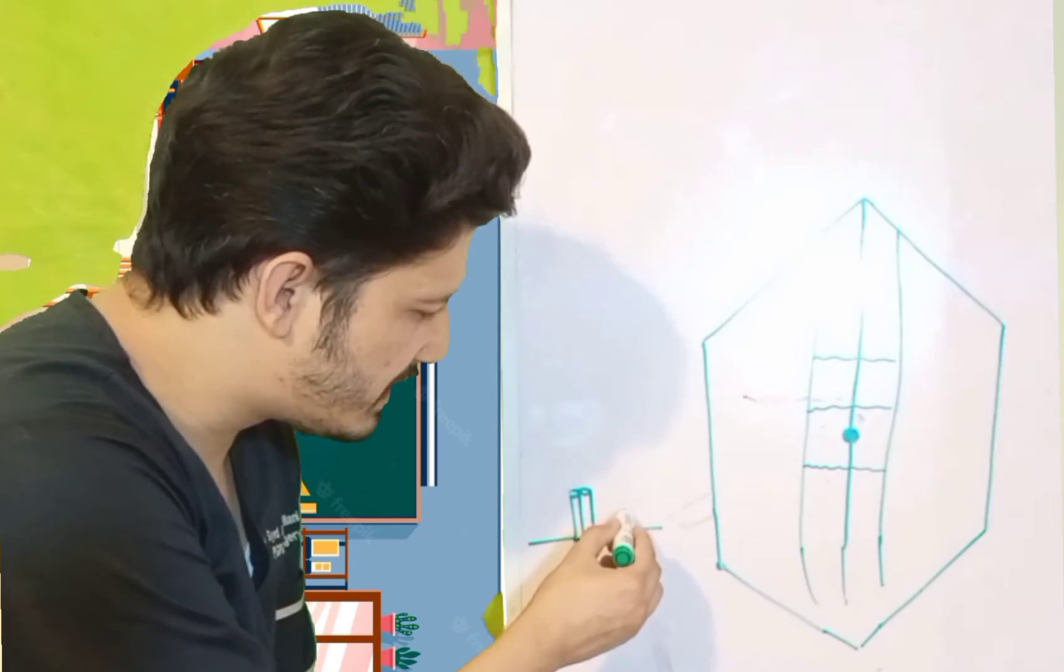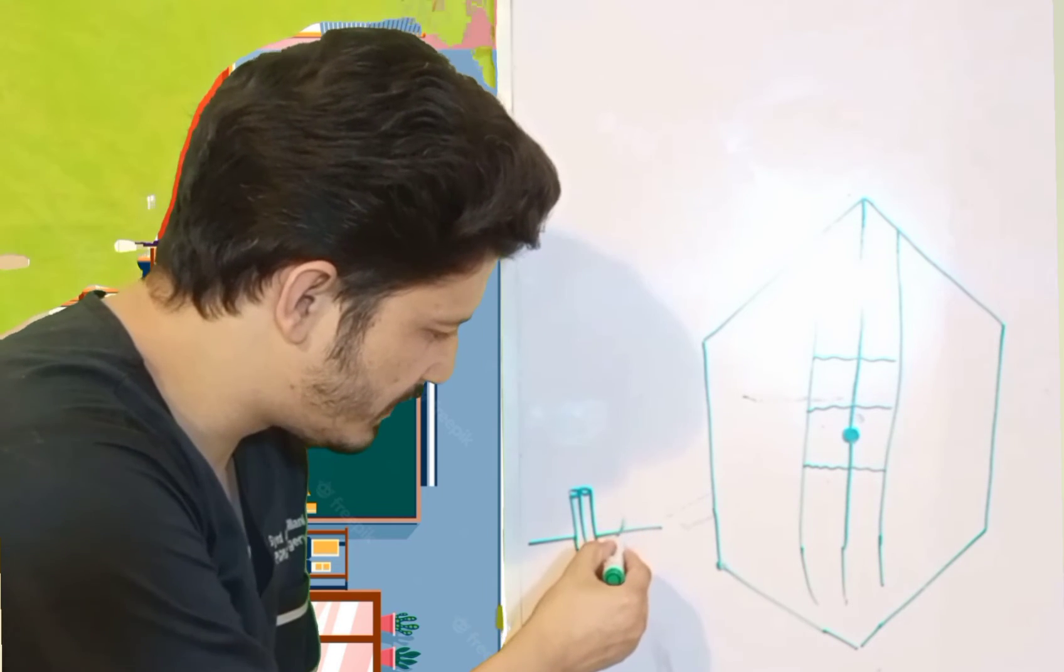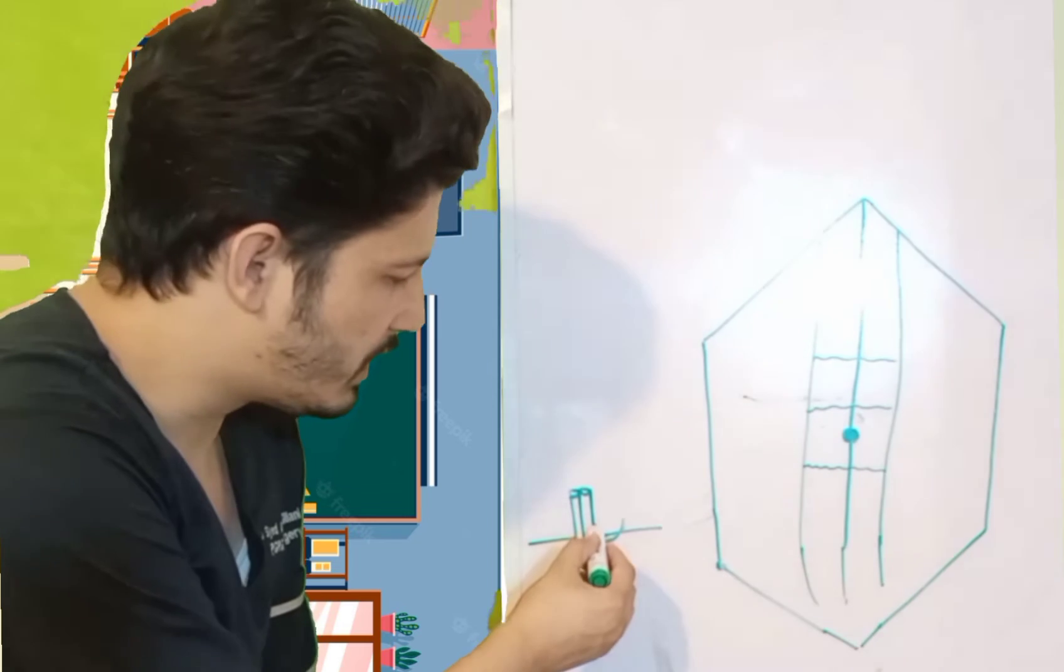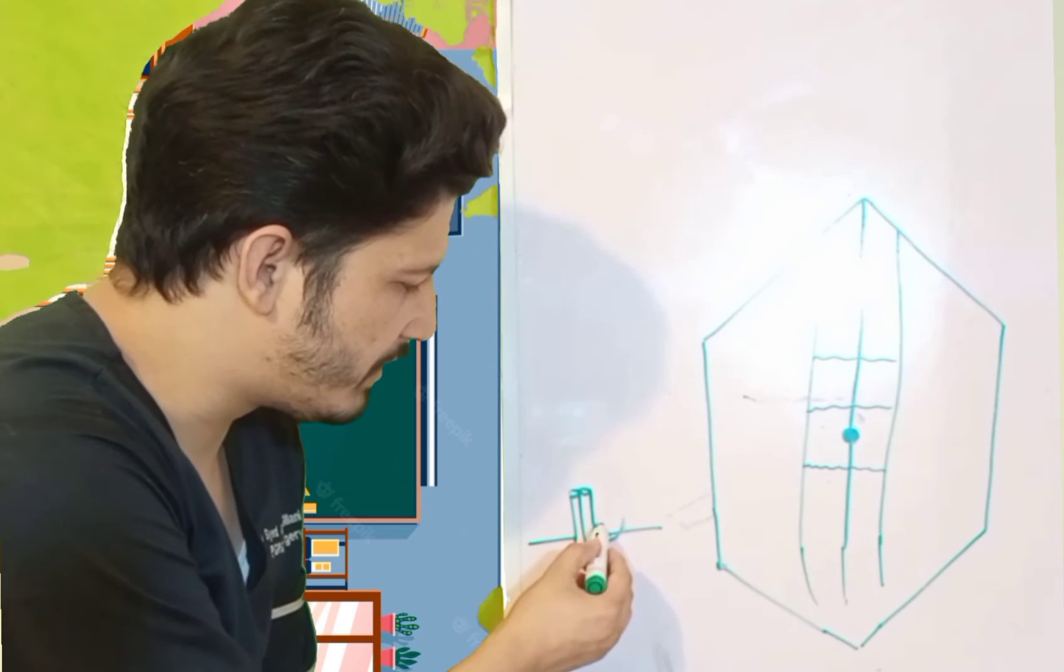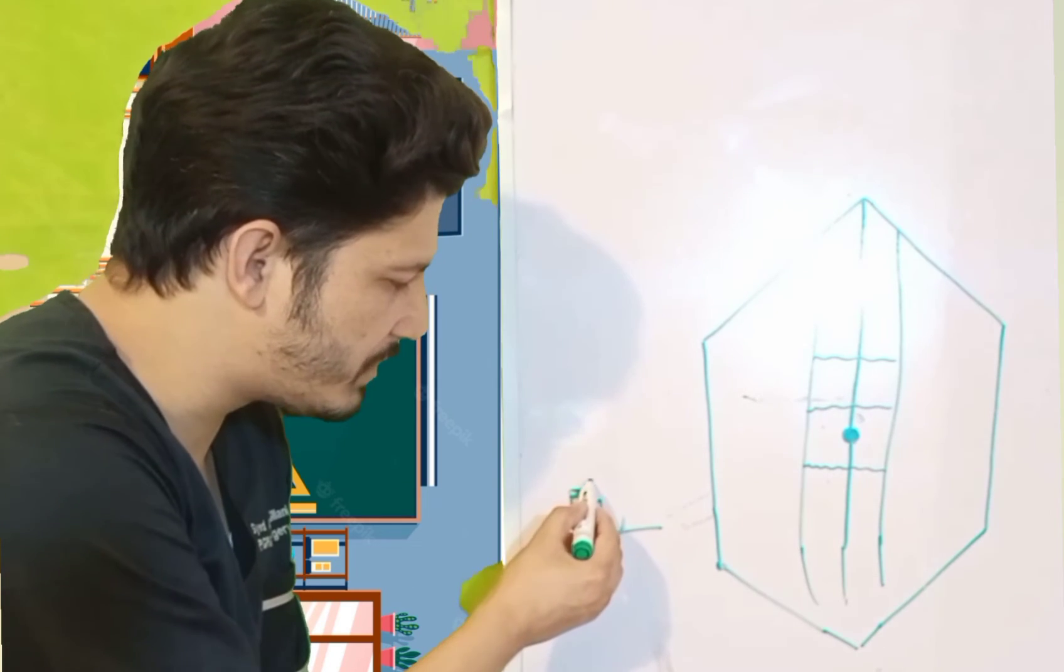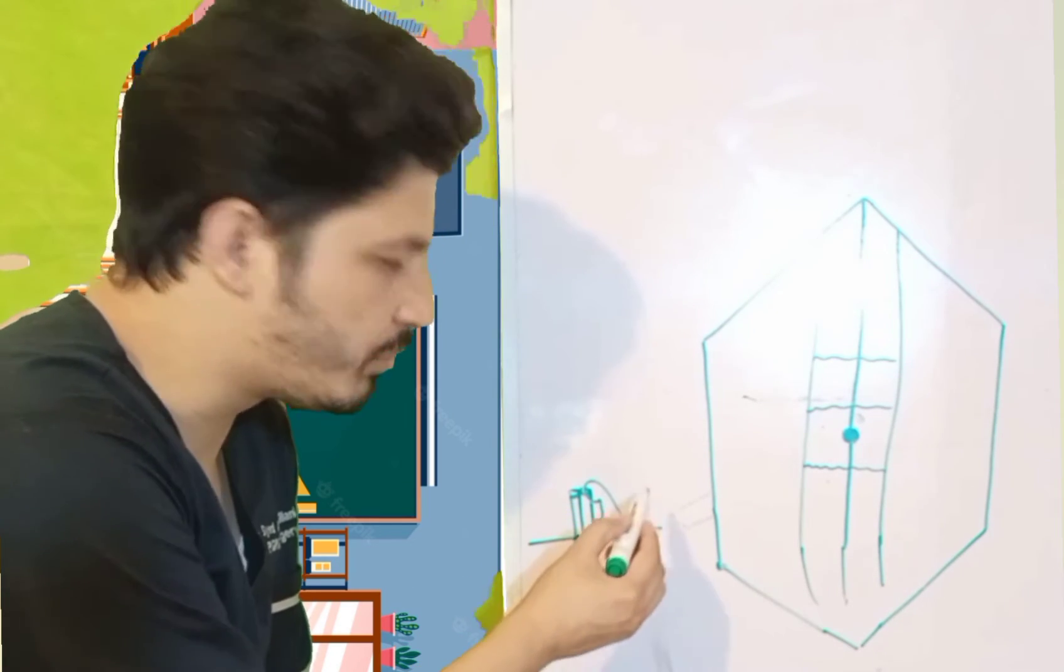I will take the stitch from the skin first of all. Then I will take the serosa, you can say that stitch, and I will come out. Then after that, I will take the full thickness stitch from the edge and I will tie both the stitches.